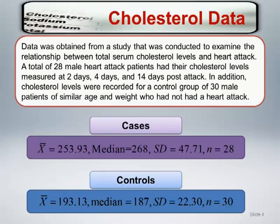The median for the controls is 187, and is slightly lower than the mean of 193.13, indicating a slight right skew. This suggests that the estimated median difference between the groups may be slightly larger than the mean difference.